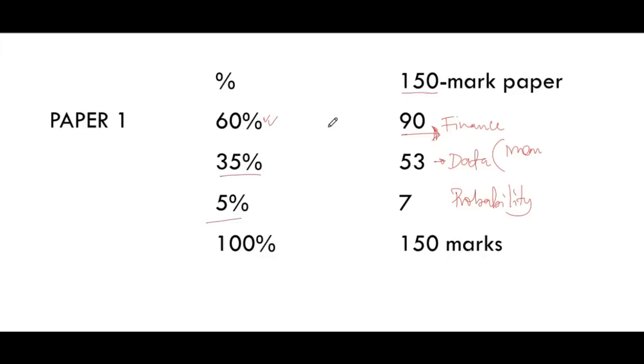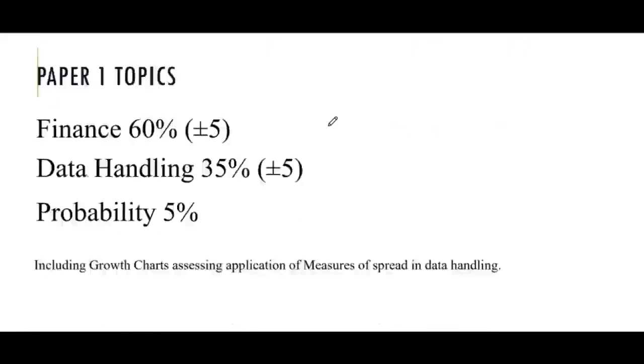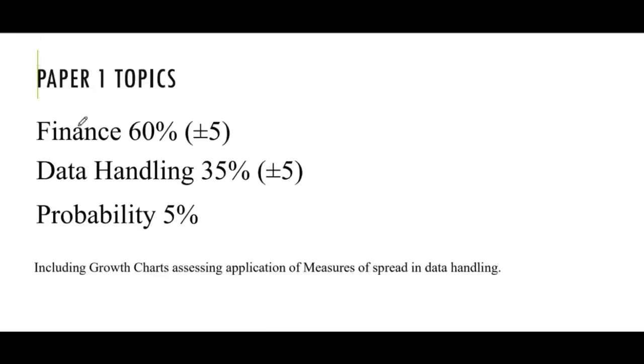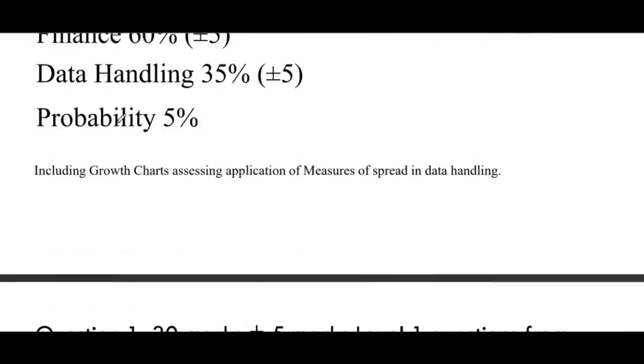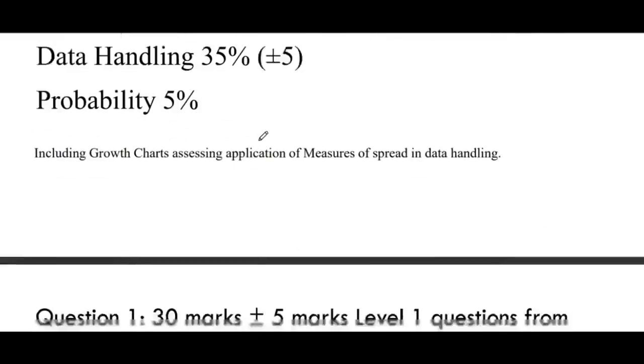VAT, pension. As I said, we have paper 1 topics, which is finance, which will be 60% plus or minus 5. Plus or minus 5 simply means might be 65 or 60, or it might be 55%. But the largest mark has to come from finance. Data handling follows, 35%, and probability, which is 5%. Here we might also include the growth chart.